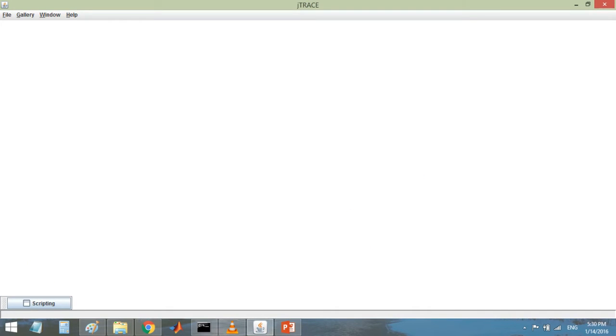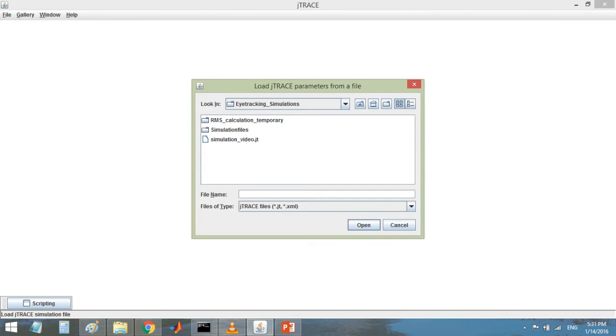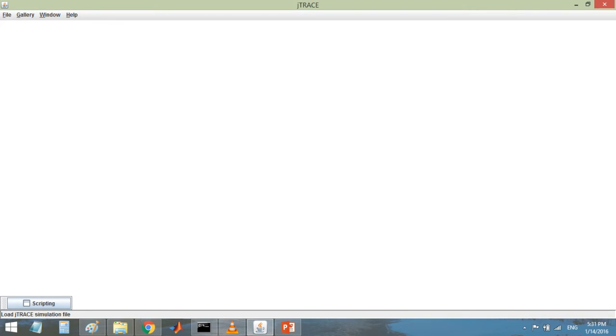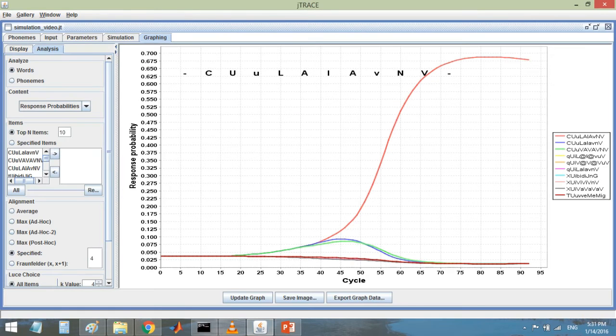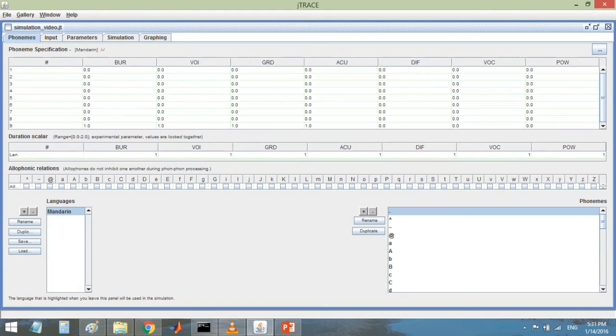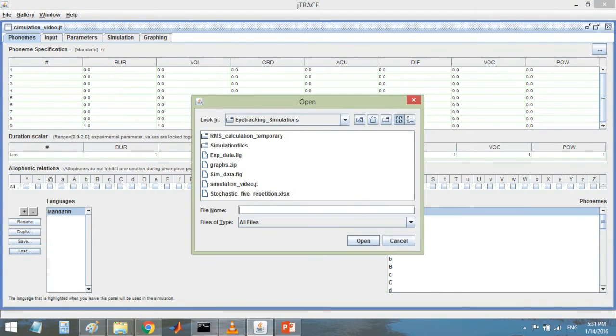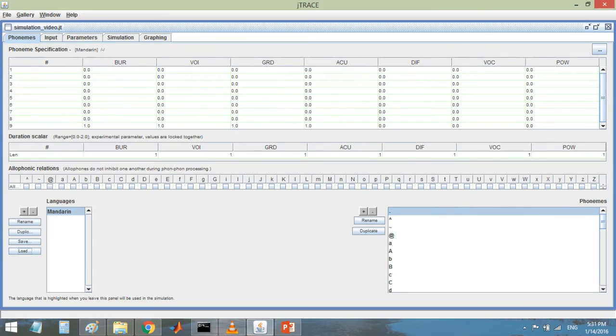Here is a simple demonstration of how TRACE T model works in JTRACE simulation. Firstly, we need to load our TRACE T model, which includes both a phoneme inventory and a lexical file. This can also be done by loading phoneme inventory file and lexical file separately.